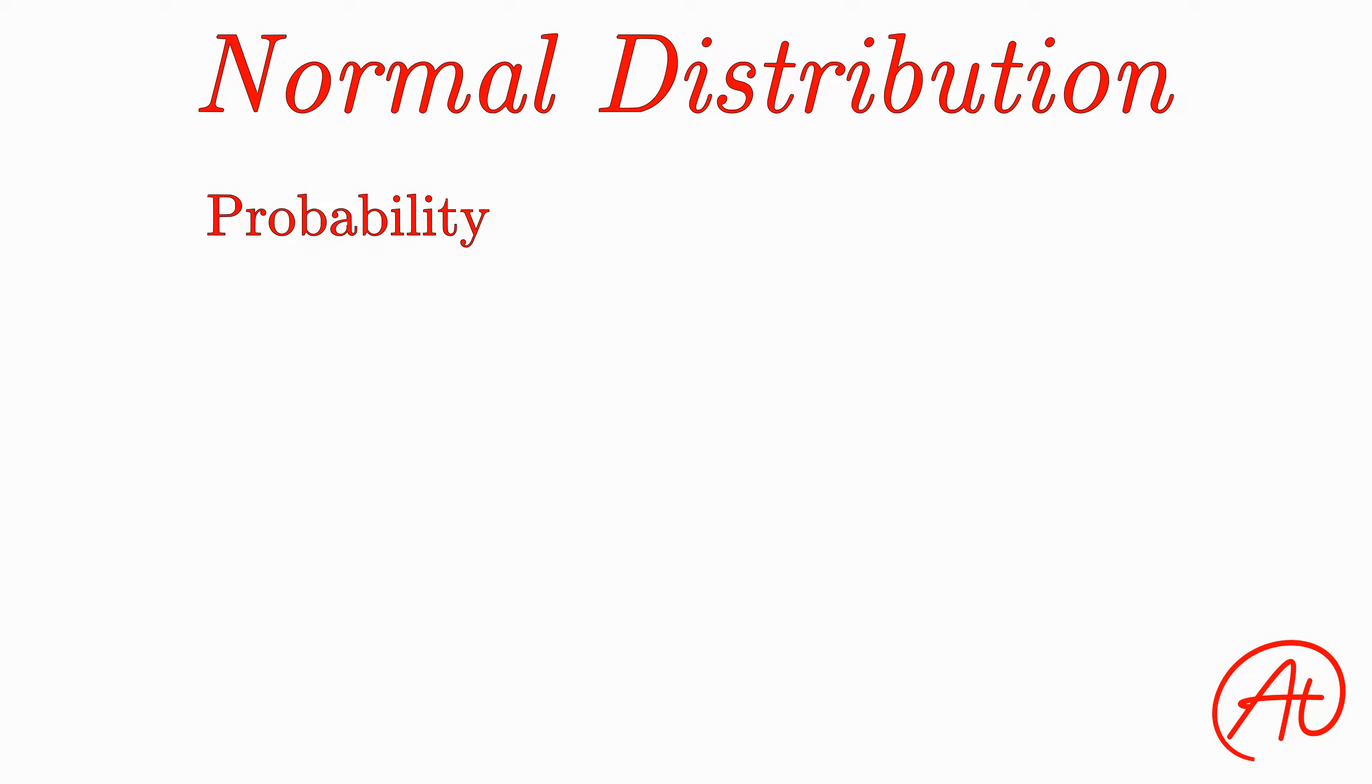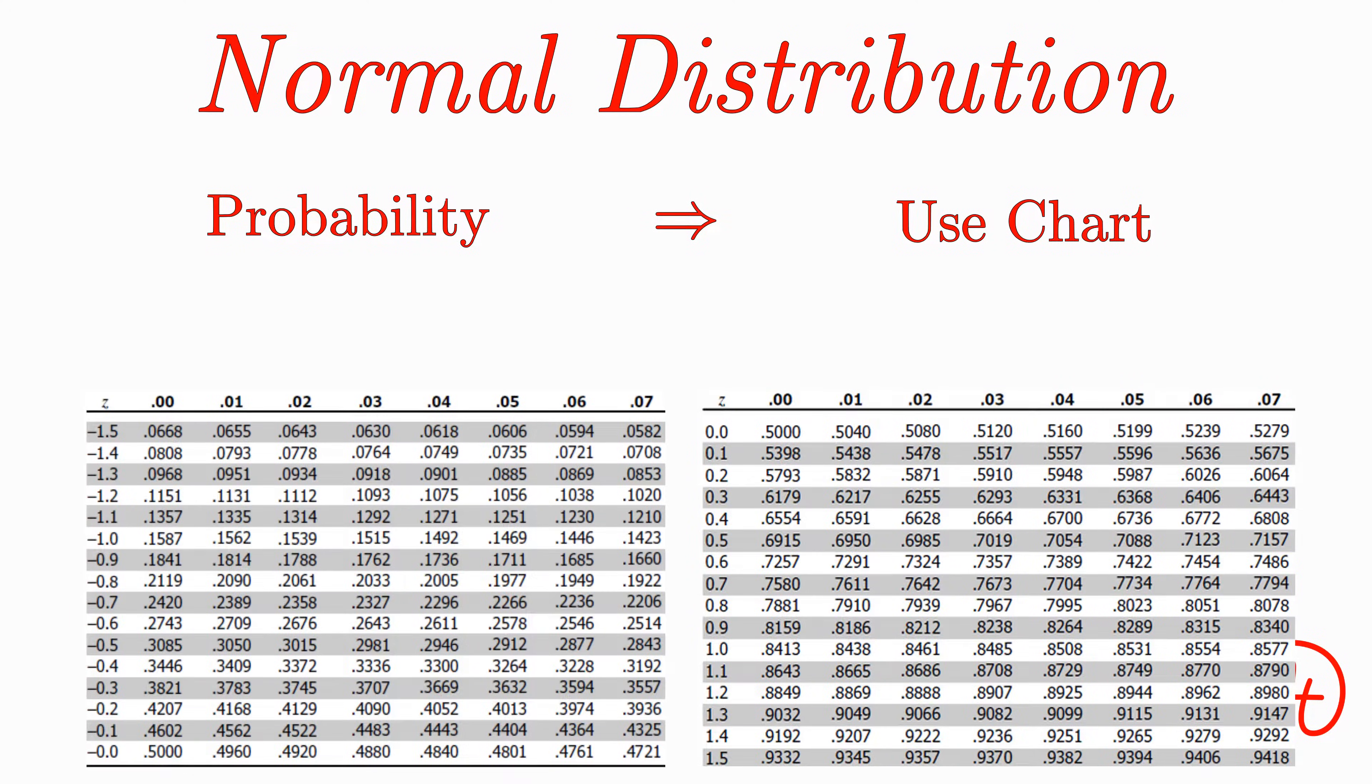Now unlike the other distributions we covered, there isn't a nice and pretty formula for figuring out probabilities for the normal distribution. Instead, to calculate probabilities for this distribution, we have to rely on using charts, which might look like these, where numbers on the leftmost column and topmost row correspond to your z-score, and the interior numbers correspond to those z-scores associated probability values.